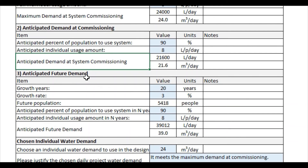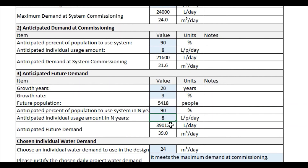Next, we can also look at the future demand. Considering 20 years into the future at a 3% growth rate, the new future population is automatically calculated as 5,418. Again, in the future, we could enter a percentage of people to use the system. In this case, we're assuming 90% and 8 liters per person per day — though that number could be higher if in the future you expect people to consume more water per person. Then 5,418 times 90% times 8 gives us a total anticipated future demand of 39,012 liters per day.